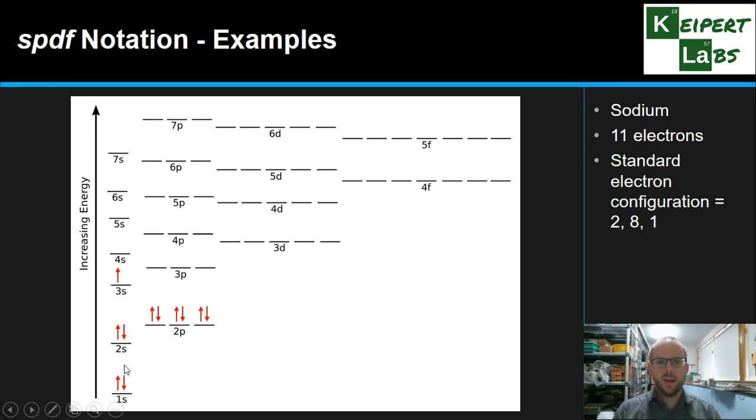Okay, so 2 in 1S, 2 in 2S, 6 in 2P, that is 2 in each of these three boxes, and then 1 in the 3S.